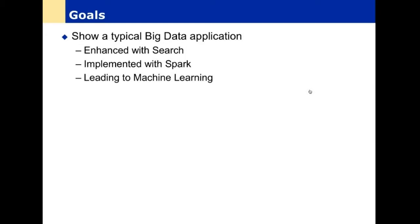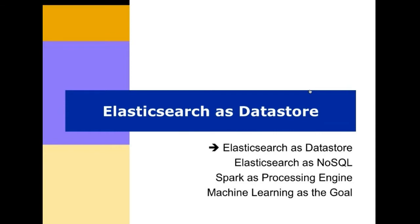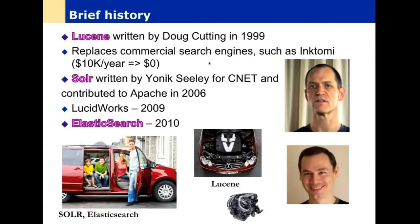The first point is this: Elasticsearch, which you probably heard about, is a search engine and that is how most people would treat it. The story behind it is a bit longer. Originally Doug Cutting, that guy whom you may know because he also invented Hadoop, created an open source project called Lucene. It was a search engine but not a UI based engine, it's not Google, it's a programming tool.